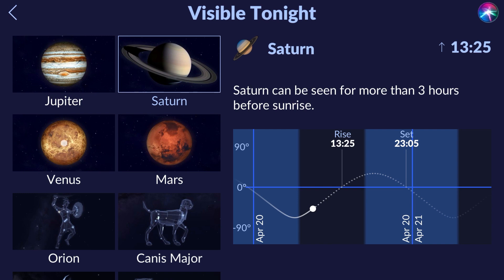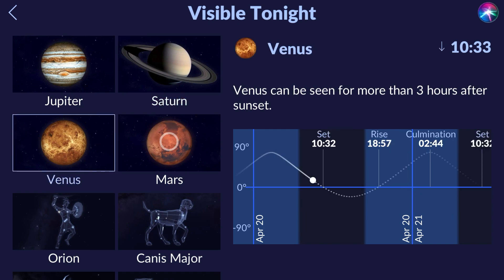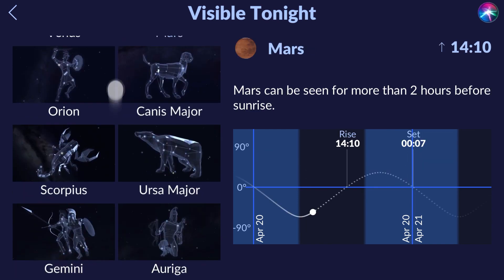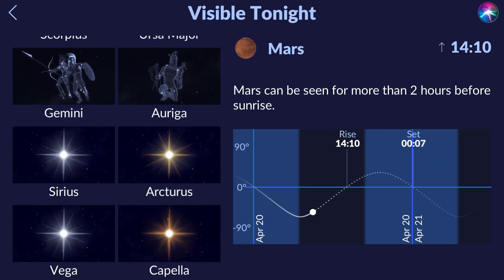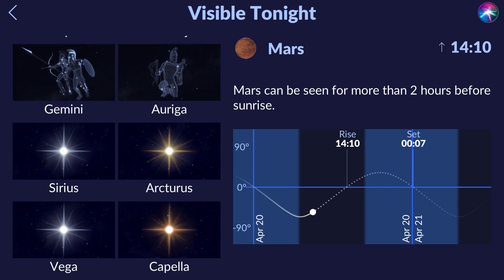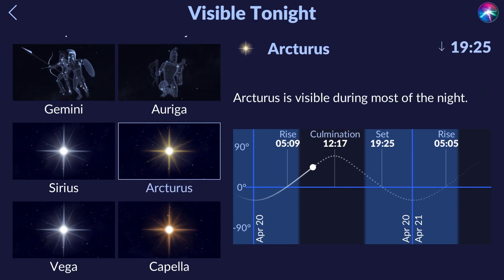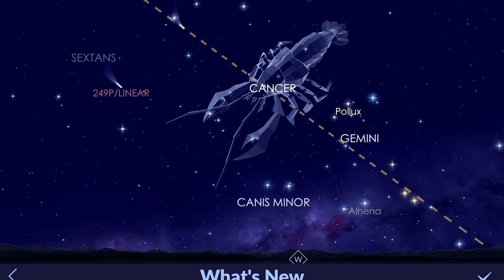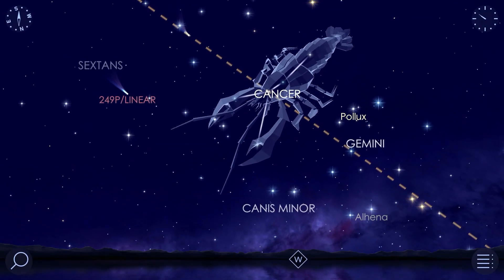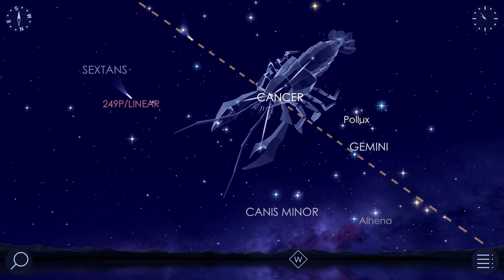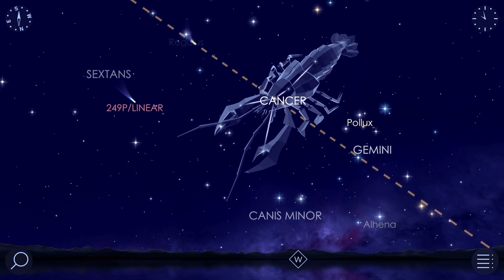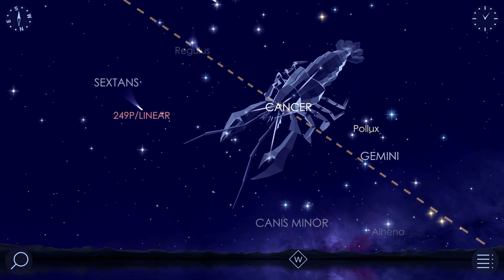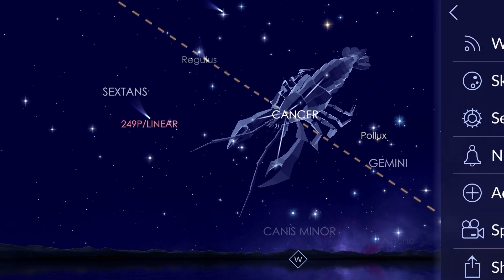You will see the objects that can be seen in your sky tonight and a grid with information about their rise, set, and culmination. Tap on an item and its data will appear on the grid. To know what is happening in the sky with the sun, the moon, and the four main planets, check the Sky Live section of StarWalk 2.